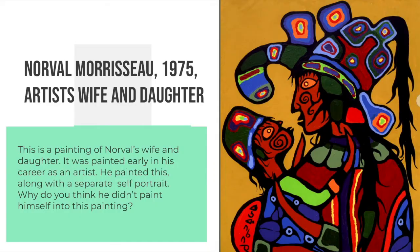Let's go back to this painting. This is the title of the painting — it's Artist's Wife and Daughter, and it was painted in 1975. This is a painting of Norval's wife and daughter; the two people we see in here are a mom and a child. He painted this early in his career as an artist, and he did this along with a separate self-portrait of himself. Why do you think that he didn't paint himself into this painting? It's just something to think about.